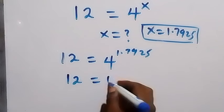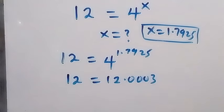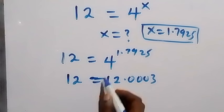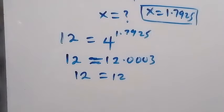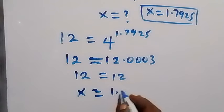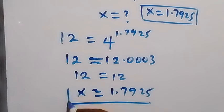That will give us 12 equals 12.0003. From here we can see that this is approximately equals to almost equals to 12. So we can conclude that 12 is equal to 12, and therefore we now say that x is therefore approximately 1.7925.